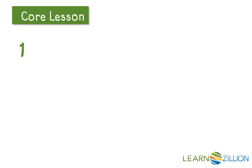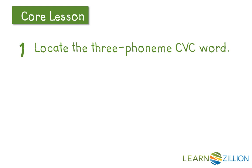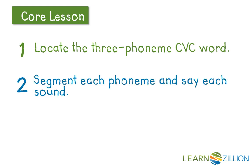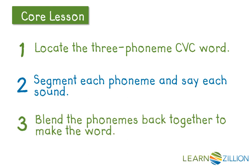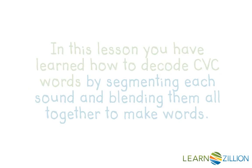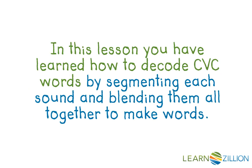Let me repeat the steps. First step: locate the three-phoneme CVC word. Second step: segment each phoneme and say each sound. Third step: blend the phonemes back together to make the word. In this lesson you have learned how to decode CVC words by segmenting each sound and blending them all together to make words.